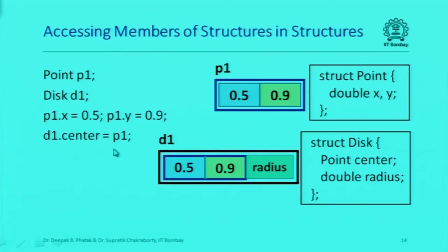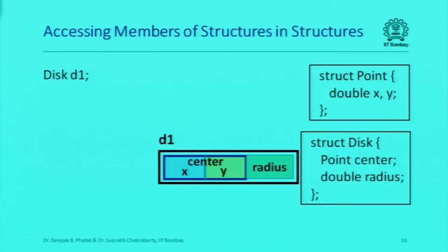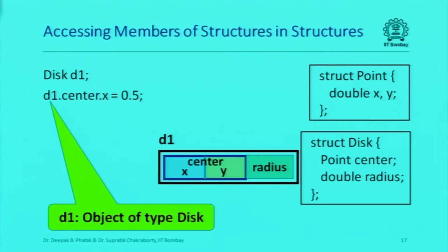I could copy p1 to d1.center — d1.center is a member of type point — so when I copy p1 to d1.center, all the members of p1 get copied to the corresponding members of d1.center. This is copying from one structure to another. Then I could set the radius to something. Alternatively, I could say d1.center.x is 0.5.